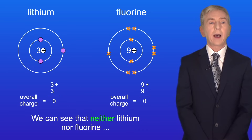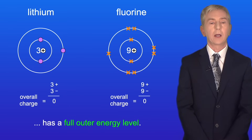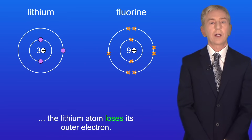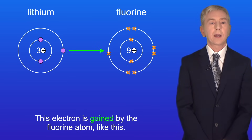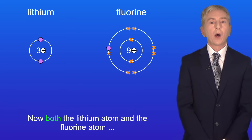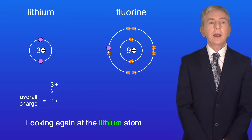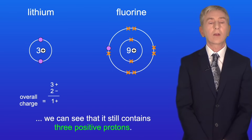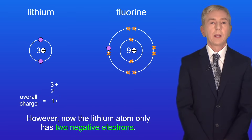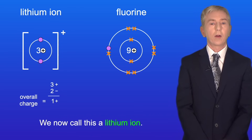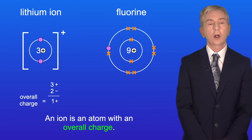We can see that neither lithium nor fluorine has a full outer energy level. When we react lithium with fluorine, the lithium atom loses its outer electron and this electron is gained by the fluorine atom. Now both atoms have full outer energy levels. The lithium atom still contains three positive protons, but now has only two negative electrons, giving it an overall one positive charge. We now call this a lithium ion — an ion is an atom with an overall charge.